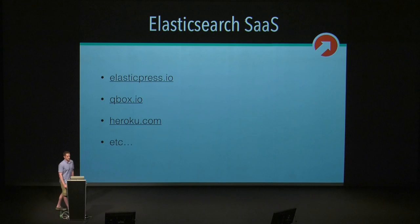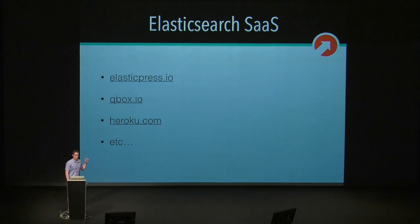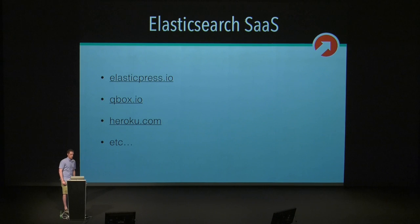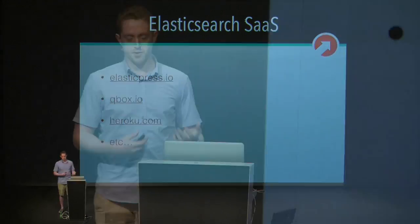Here's a list of some of the Elasticsearch SaaS products. Elasticpress.io is 10up's Elasticsearch SaaS product geared for enterprise. Qbox.io is a great one and relatively affordable. Heroku has one. Amazon — pretty much every major cloud-based infrastructure company offers some sort of Elasticsearch SaaS product at this point.